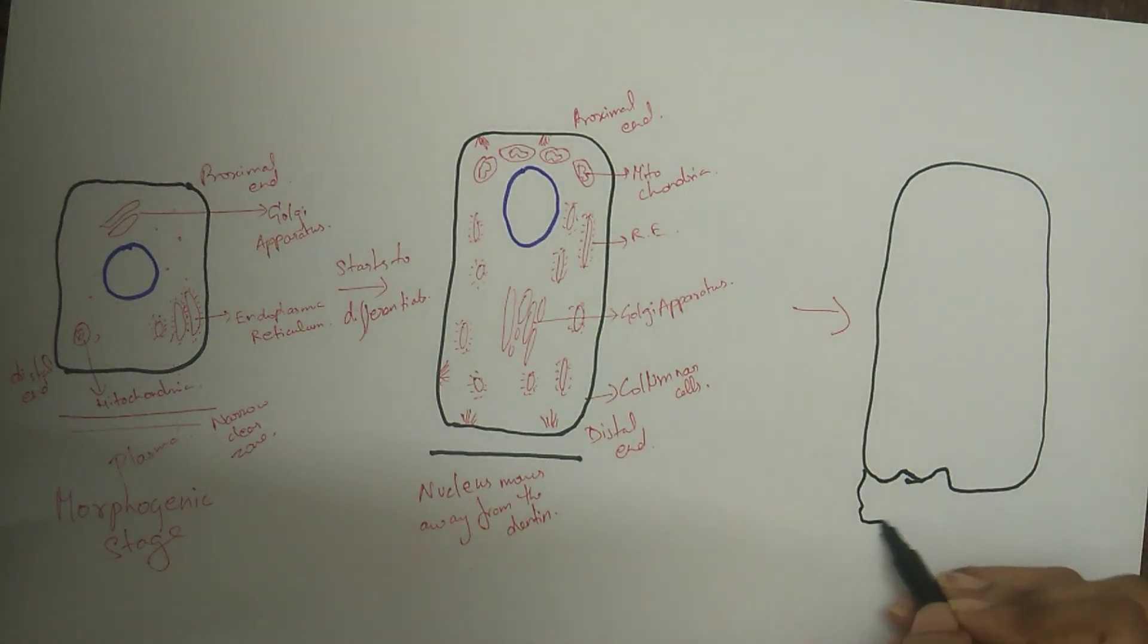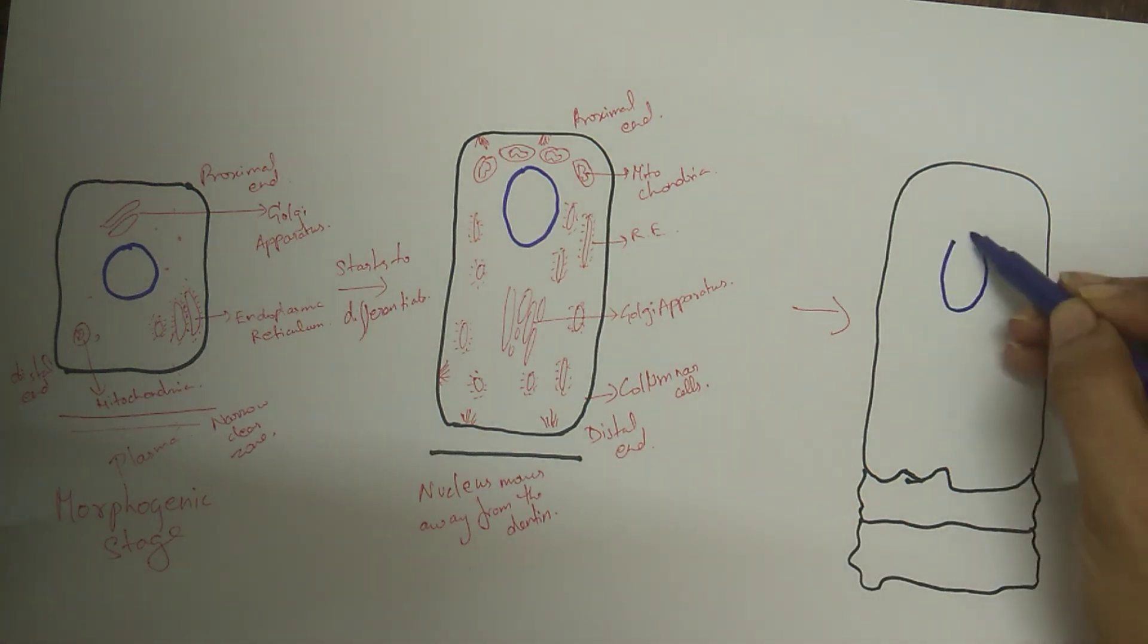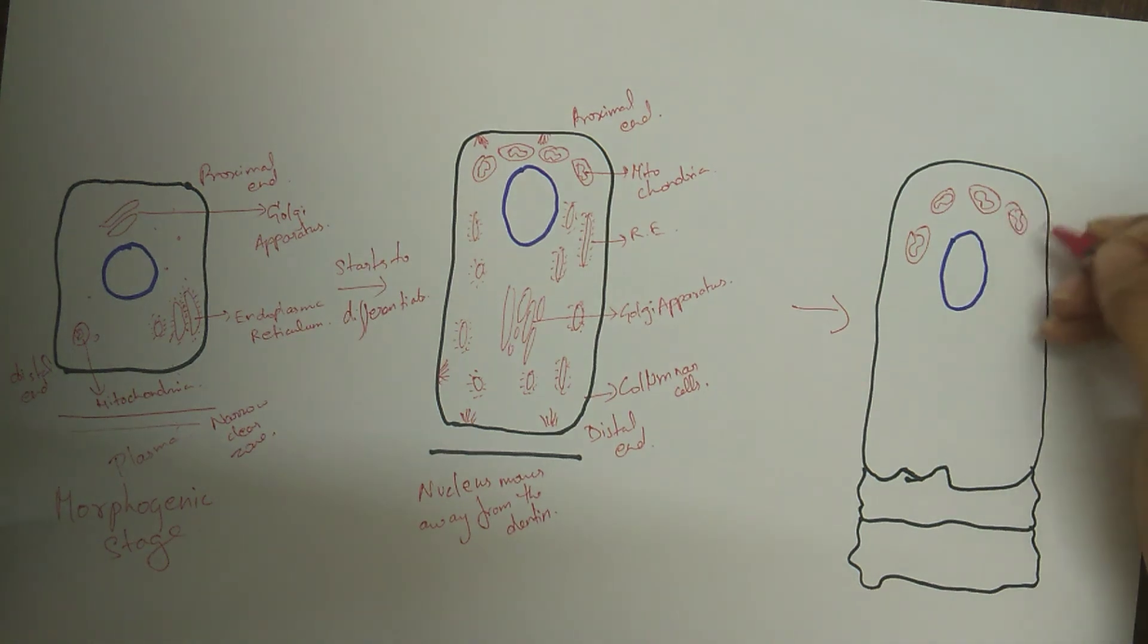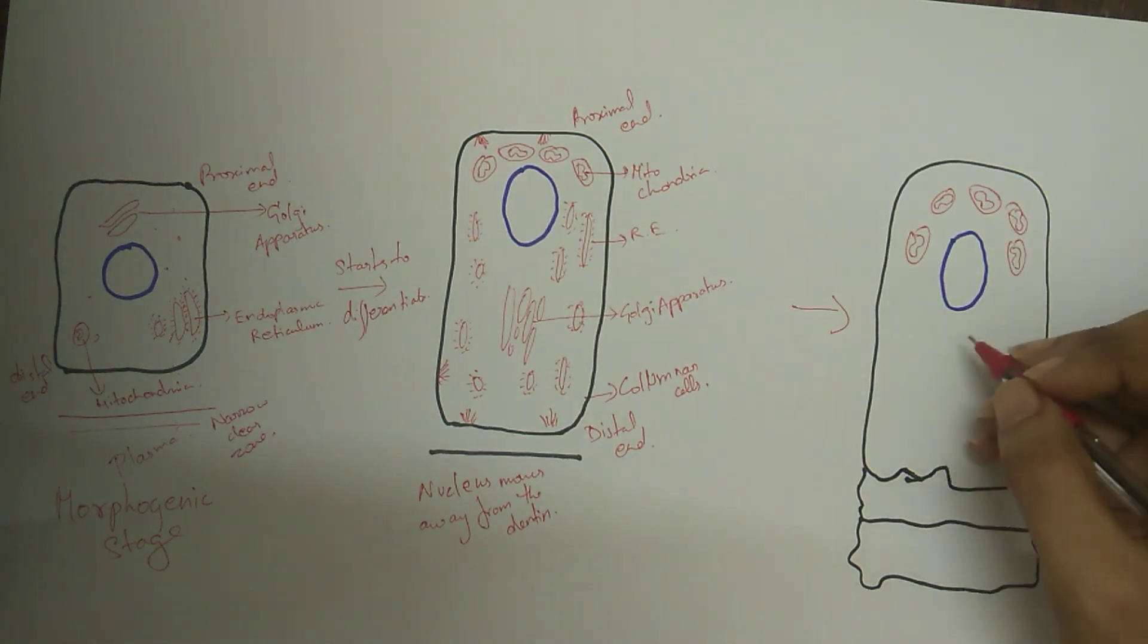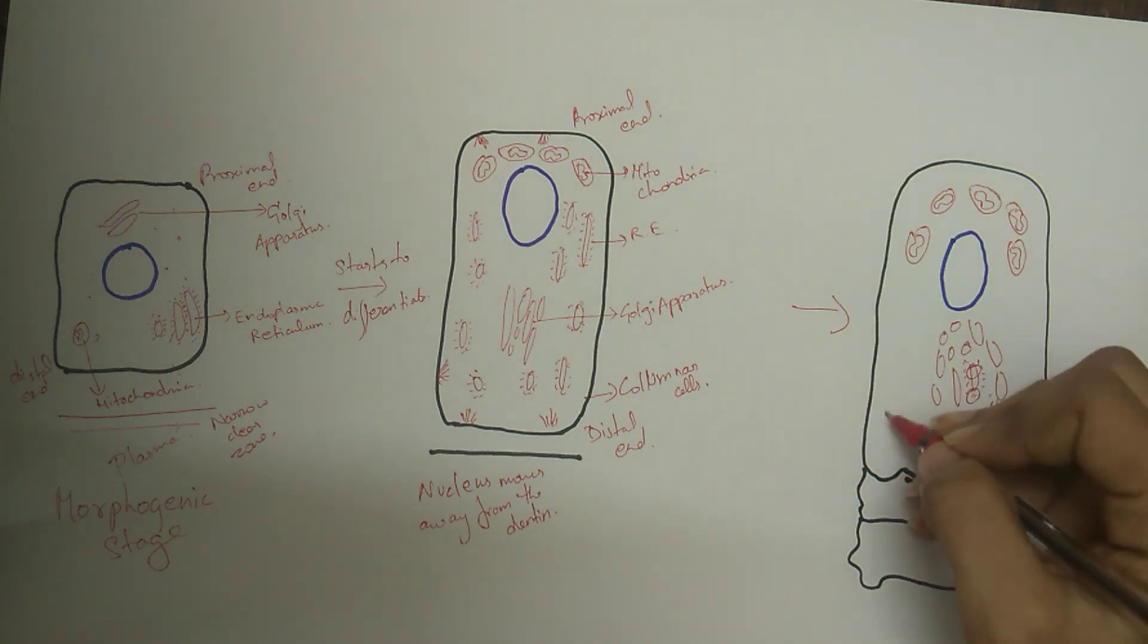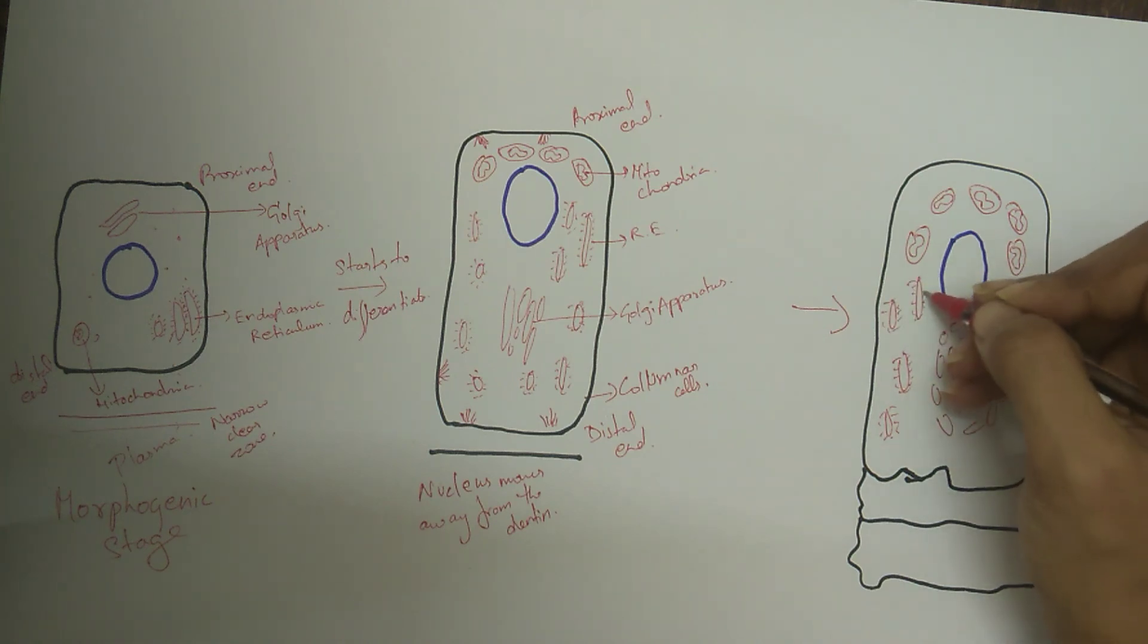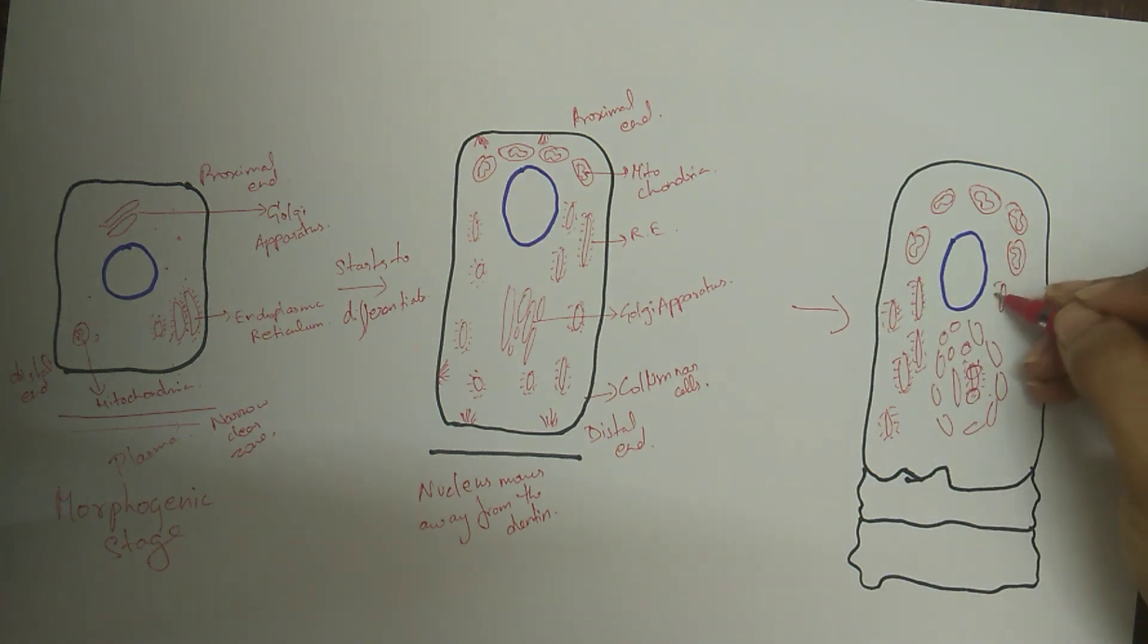Organizing stage is followed by the formative stage or secretive stage, where the differentiated inner enamel epithelial cells, that is the ameloblast, begins the formation of the enamel matrix after the first layer of dentin is formed. The presence of dentin is necessary for the beginning of enamel matrix formation. This is similar to the necessity of the inner enamel epithelial cells coming in contact with the connective tissue cells of dental papilla for the differentiation of the odontoblast and the beginning of dentin formation.